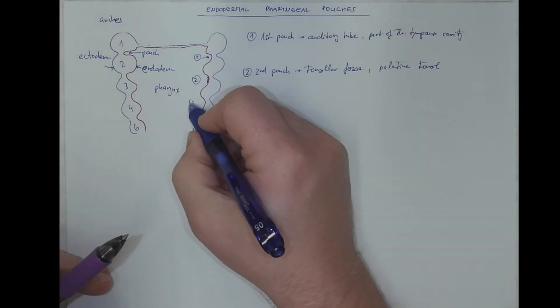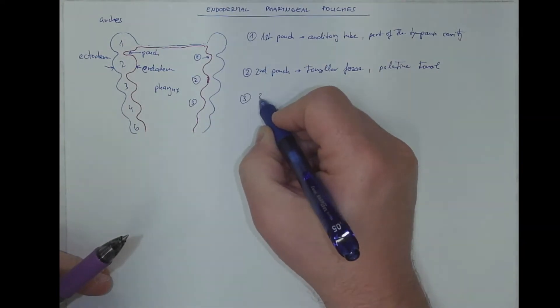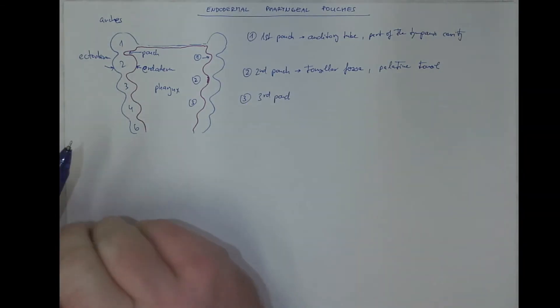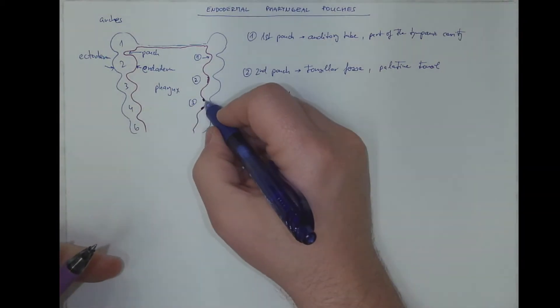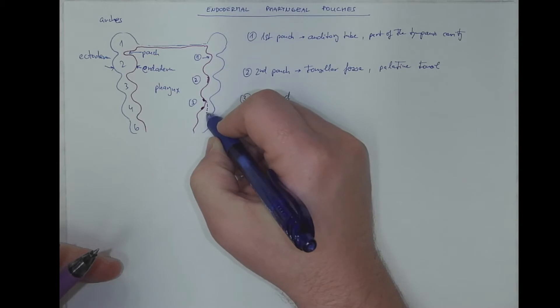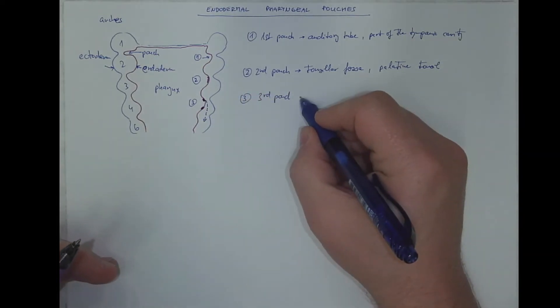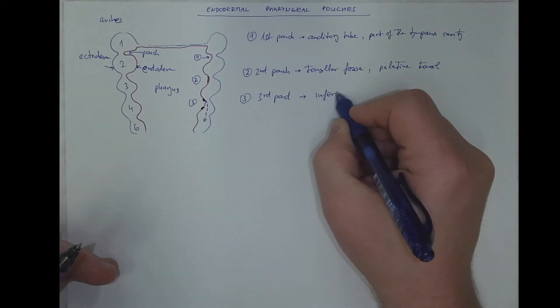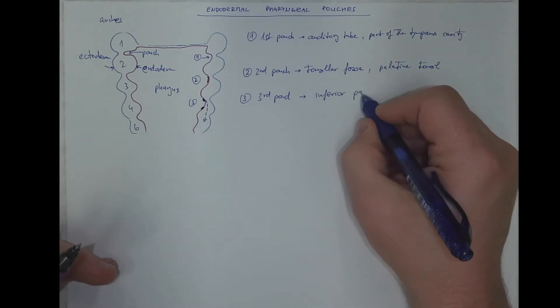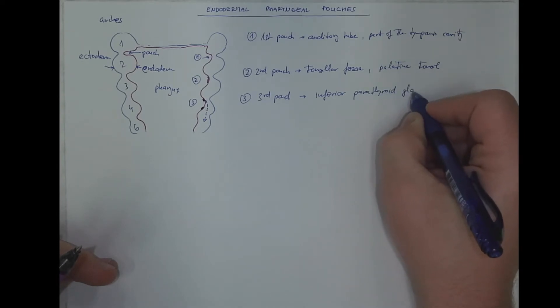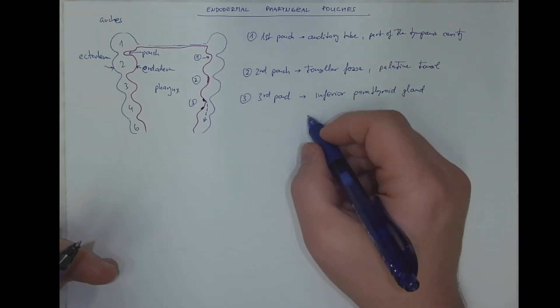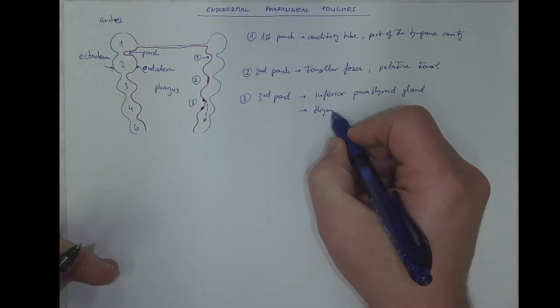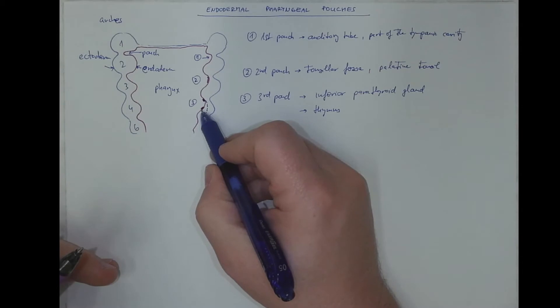In the 3rd pouch, 2 organs emerge. Again, their epithelial component is the thickening of this endoderm. One of these organs will migrate later on downwards, becoming the inferior parathyroid gland. The other organ will become the thymic epithelium. Its reticular epithelium is of the endodermal origin.